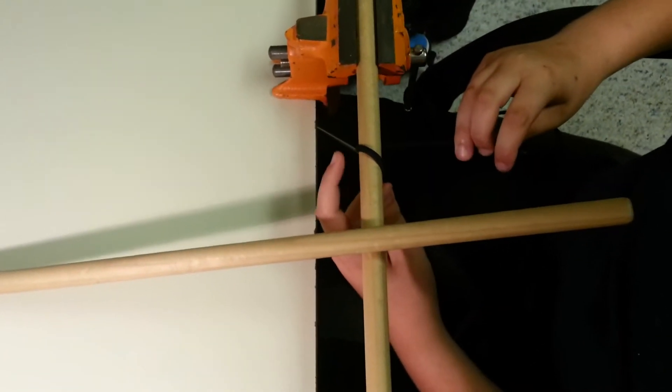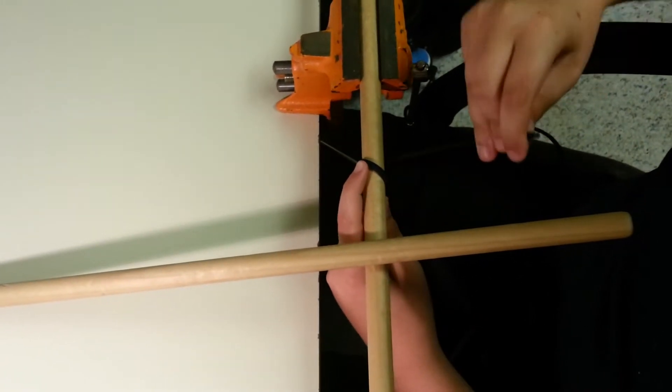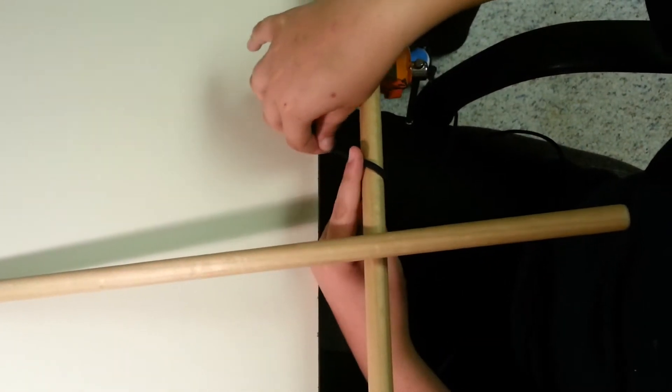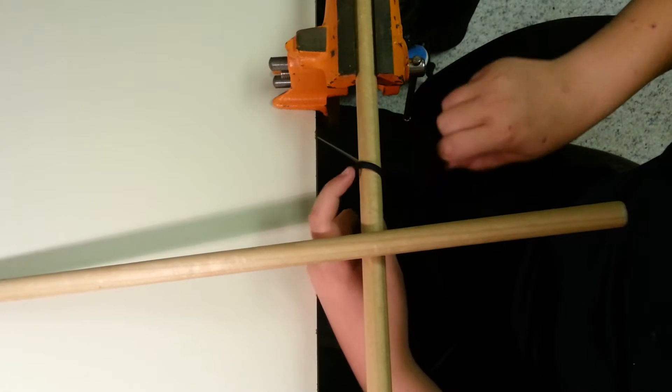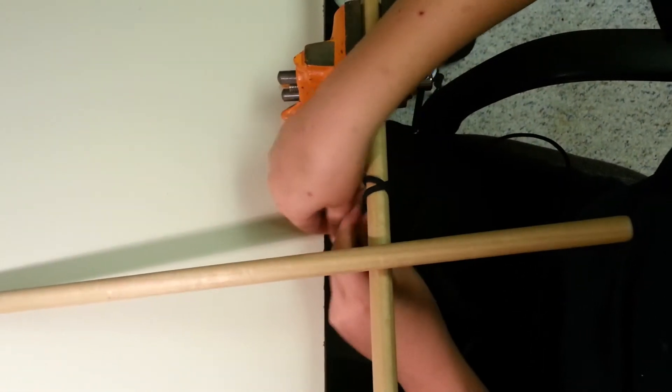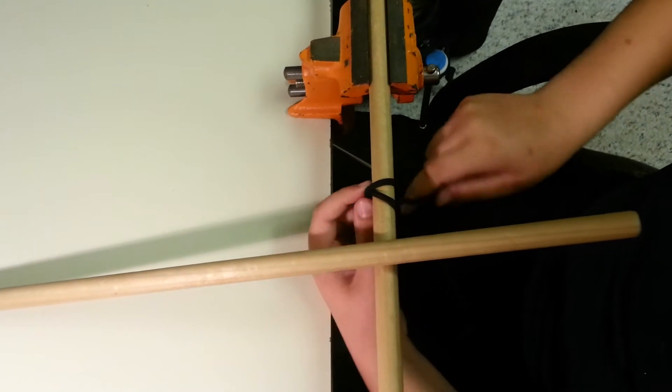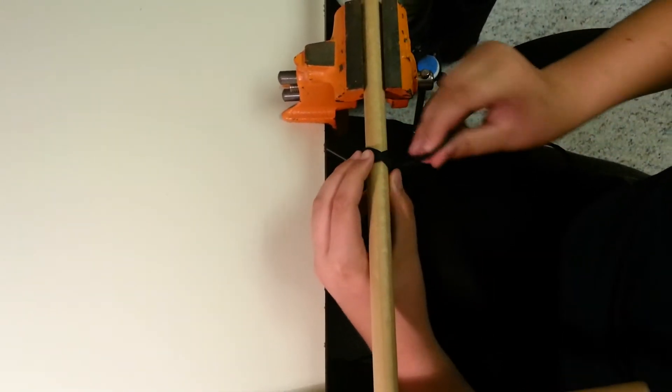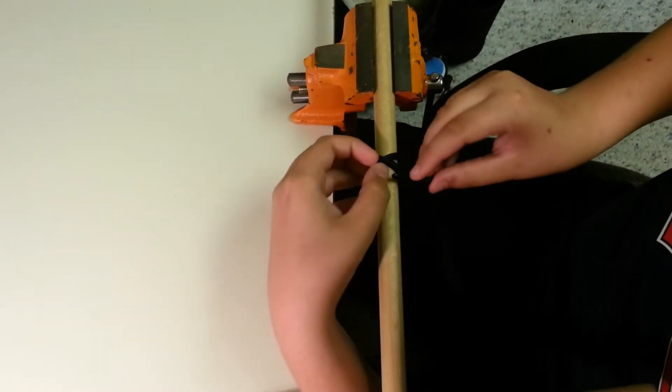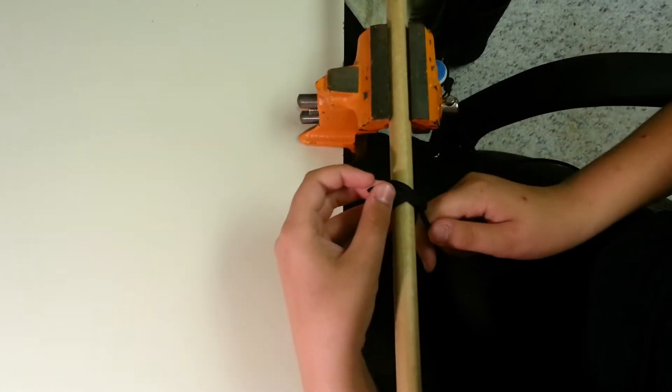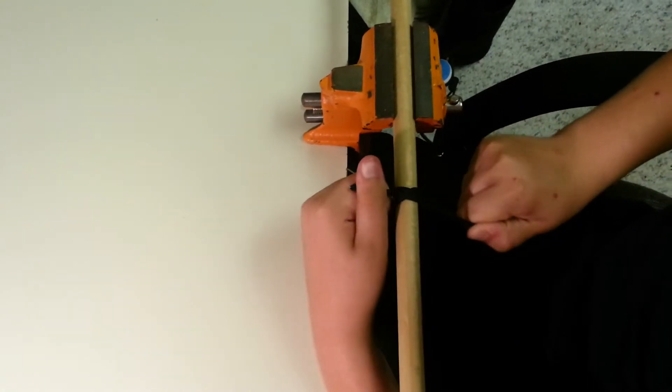I'm gonna start off with a clove hitch. First, I'm gonna take my line and lay it at an angle over the top of the dowel rod, then bring it under, and then put it over so I have an X. Then I'm gonna take it and come underneath this top piece of paracord.